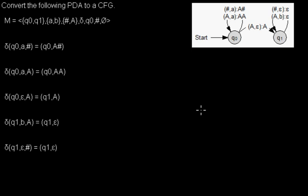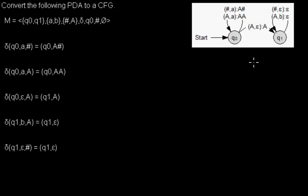I'd like to show you an algorithm that lets you convert any pushdown automaton to a context-free grammar. It's not that easy to understand, but I'll do my best to break it down. The first thing to notice is that this pushdown automaton accepts with an empty stack, not with a final state. You can convert any pushdown automaton that accepts with a final state to one that accepts with an empty stack, so no problem with that.